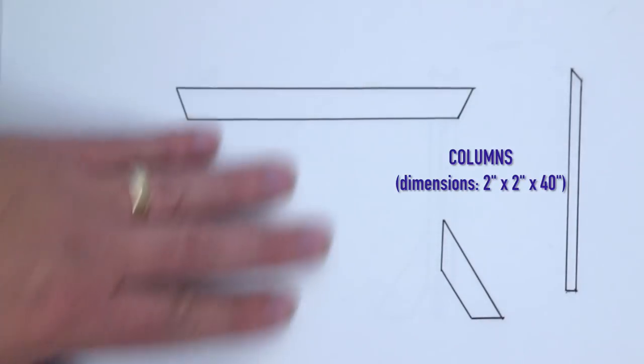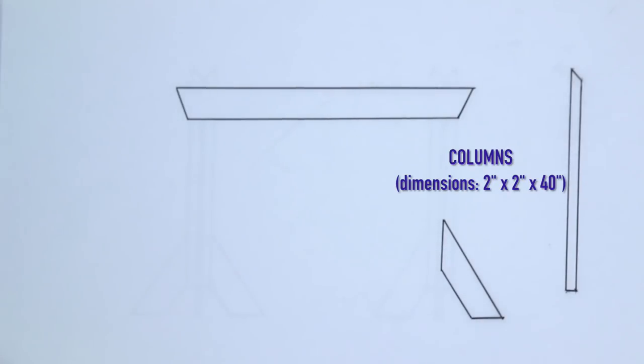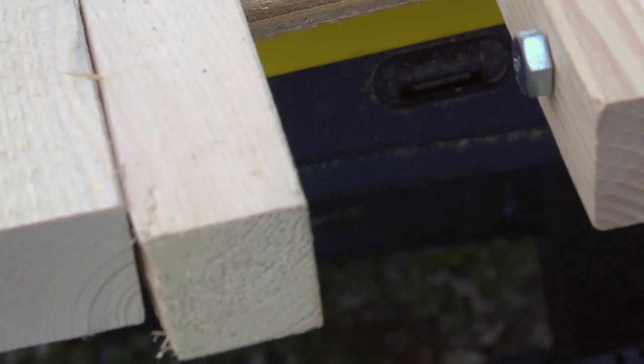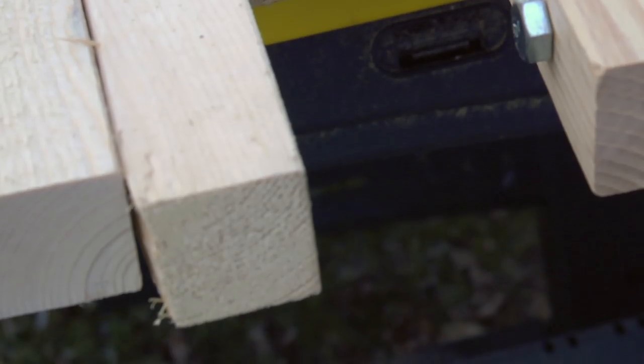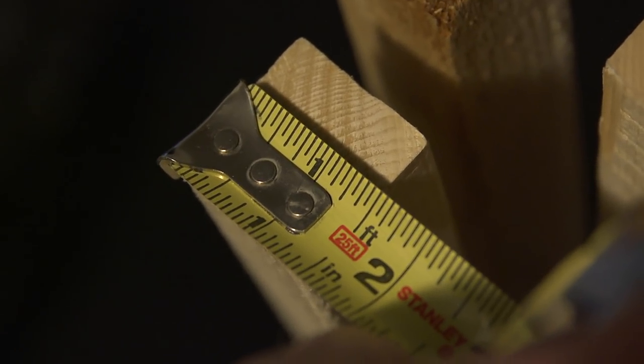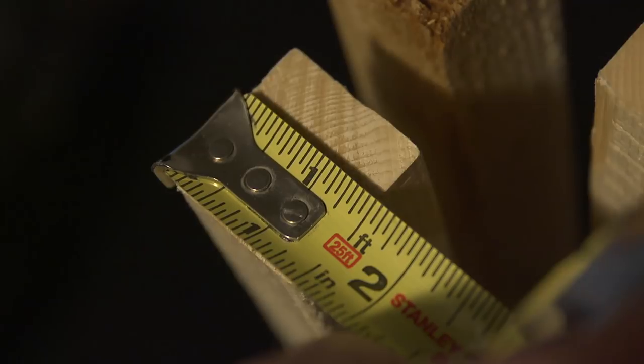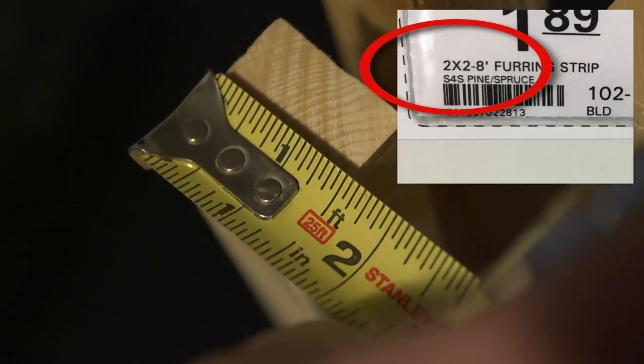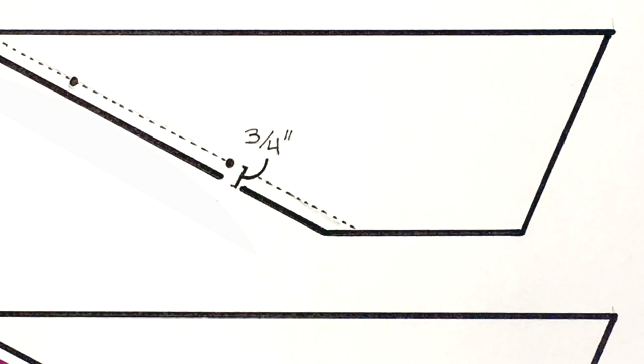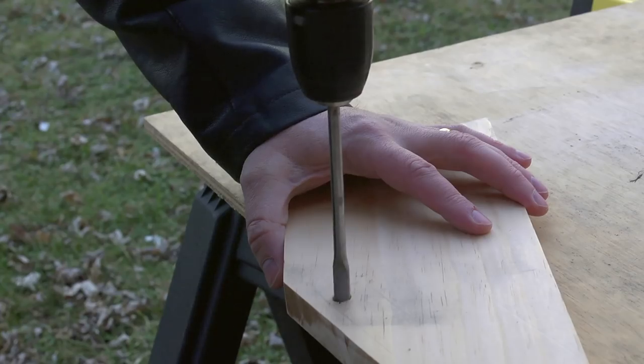Just so no one gets confused, I want to make a quick point about the dimensions of the columns. They're sold as two inches by two inches, and they are indeed a square, but it's closer to about one and a half inches for each side. This is maybe a little shocking if you go into a hardware store in the U.S. A lot of times whatever is on the sticker is not what the actual dimensions will measure. Because of this, we're going to be putting the holes that we drill in the feet three quarters of an inch from the edge.